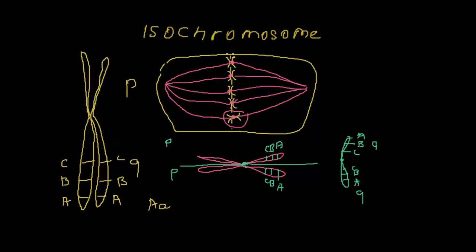And when this one cell would form two cells, on this side we will have one of the chromosomes with two identical arms, that is long arms.